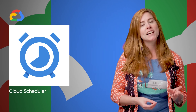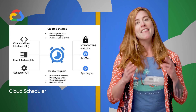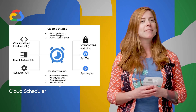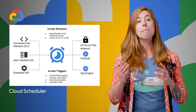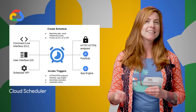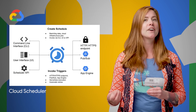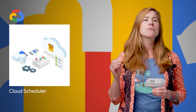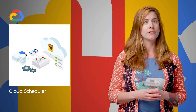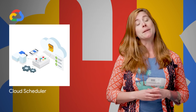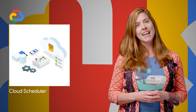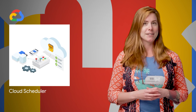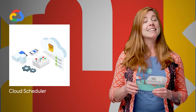Cloud Scheduler is a fully managed cron job service that allows any application to invoke batch, big data, and cloud infrastructure operations — essentially a modern managed cron service for automated batch jobs. It's now available. A link to the quick start is on the post.